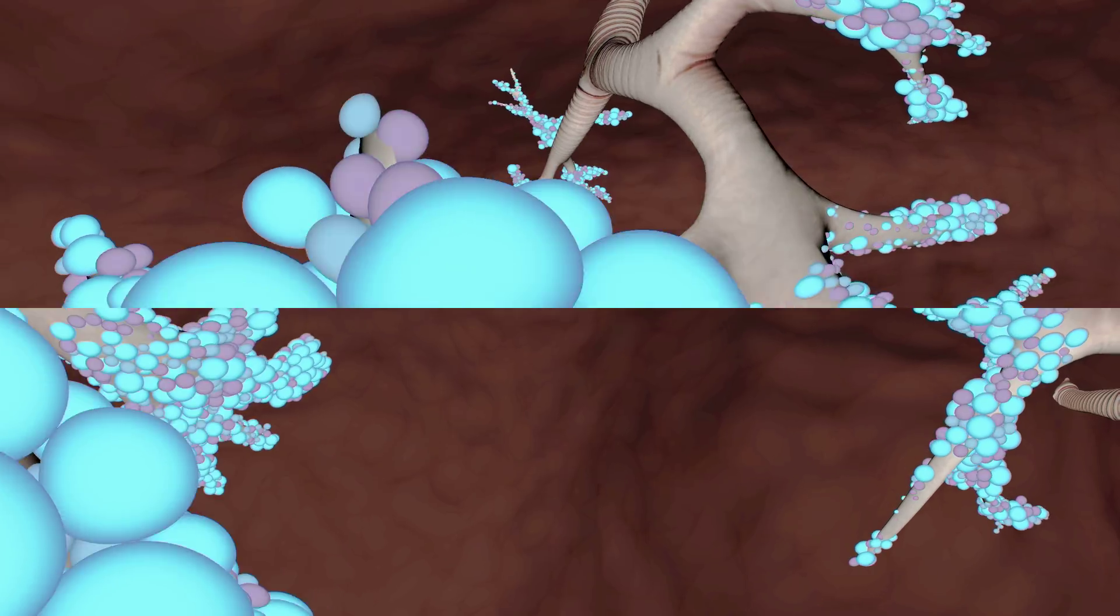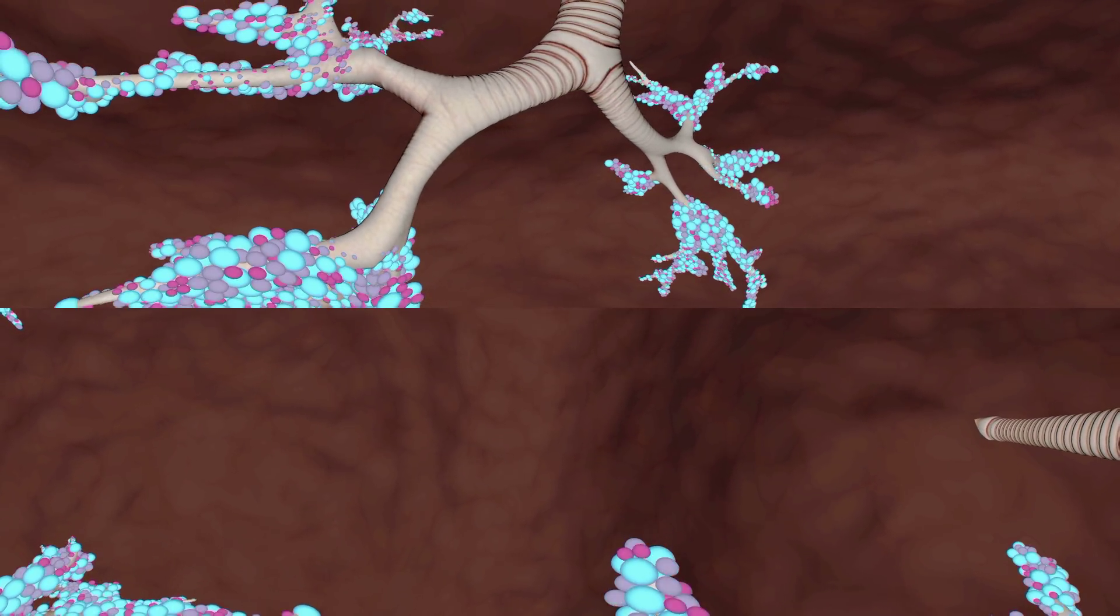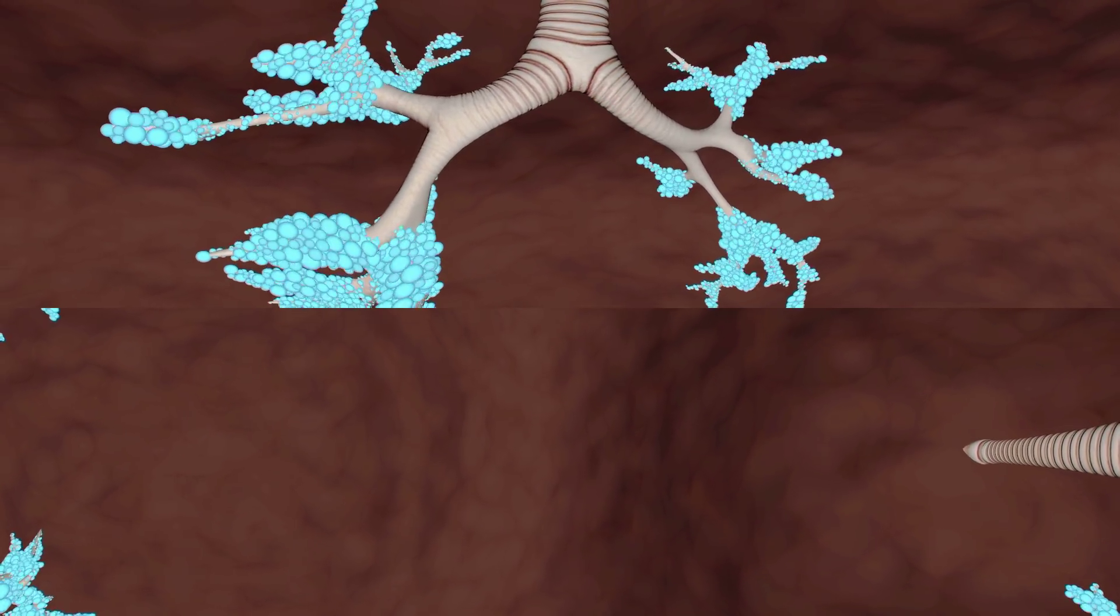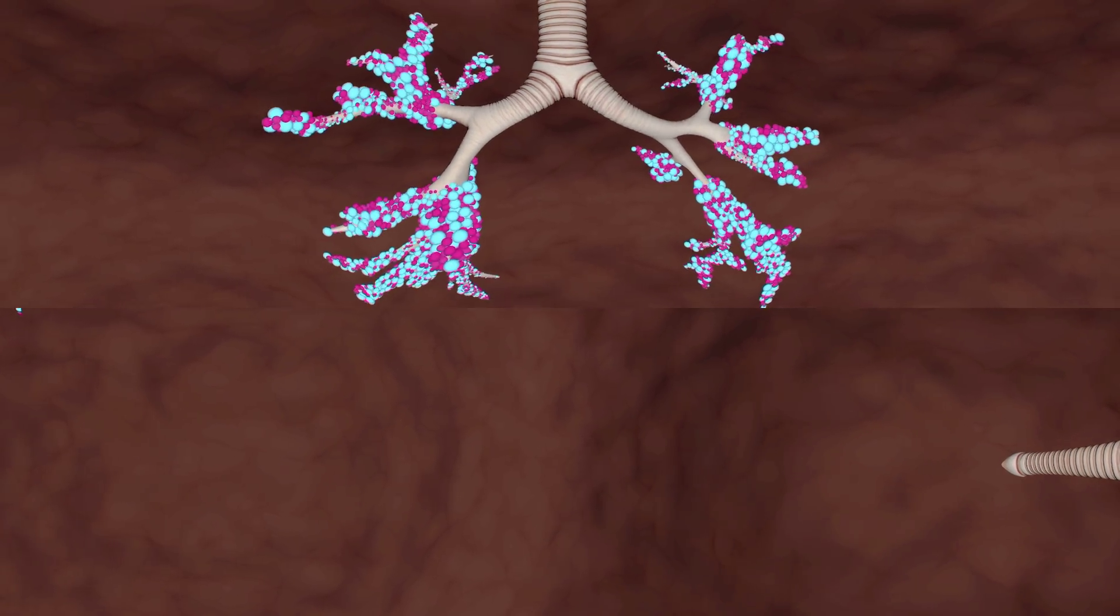You can see each of the bronchus branches into thin tubes with pulmonary vesicles at the end. That's where the blood gets oxygen and gives off carbon dioxide. By the way, an adult person performs around 23,000 inhalations and exhalations a day. Impressive, huh?